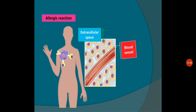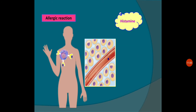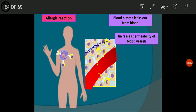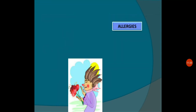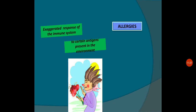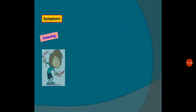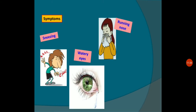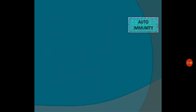Histamines and serotonins enter the bloodstream and into the intercellular space. They travel to intercellular space, leaking out from blood plasma, which increases the permeability of blood vessels. As a result, you get an exaggerated immune response with symptoms like continuous sneezing, watery eyes, running nose, and in some cases small rashes on the skin — these are all symptoms of allergic reactions.